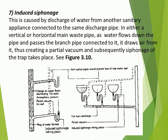Induced Siphonage: this is caused by the discharge of water from another sanitary appliance connected to the same discharge pipe. In either a vertical or horizontal main waste pipe, as water flows down the pipe and passes the branch pipe connected to it, it draws air from it, thus creating a partial vacuum and subsequently siphonage of the trap takes place. See figure 3.10.